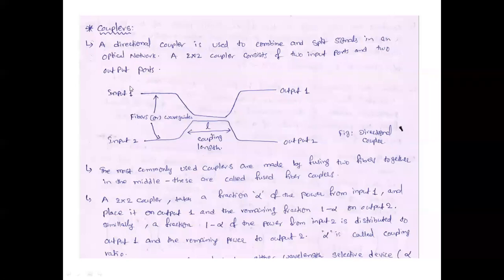See this figure. There are four ports: input port 1, input port 2, output port 1, and output port 2. The coupling length between input and output is L. This is the point where exactly coupling takes place between input and output. This is a 2×2 coupler — two inputs and two outputs.